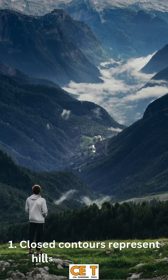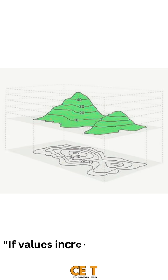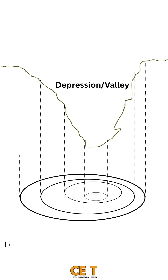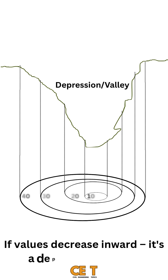1. Closed contours represent hills or depressions. If values increase inward, it's a hill. If values decrease inward, it's a depression or valley.